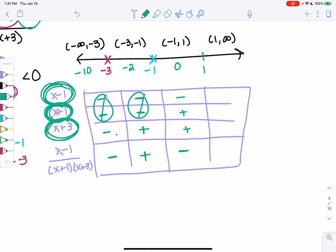And then for our final interval, anything bigger than 1, I'll choose 5. 5 minus 1 is positive. 5 plus 1 is positive. And 5 plus 3 is positive. We're just plugging in the test values for x. And so we get a positive interval.